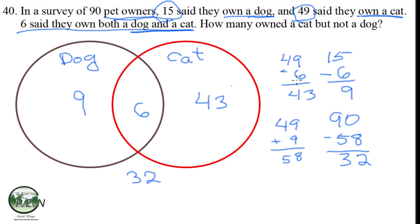And getting back to the question that was asked, and sometimes they'll ask more than one, we're asked how many own a cat but not a dog? And that's going to be these 43 right here. So the answer to the question is 43.